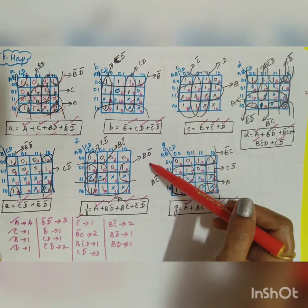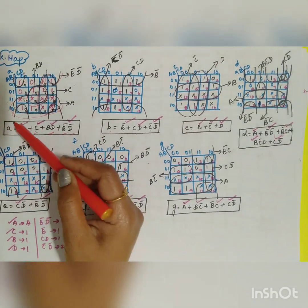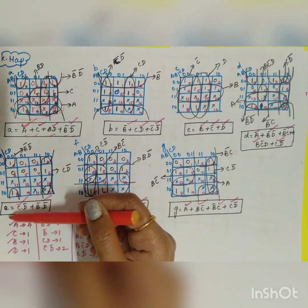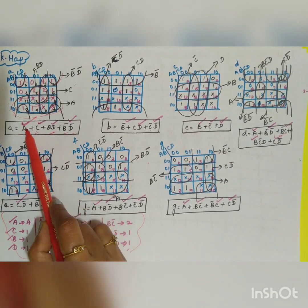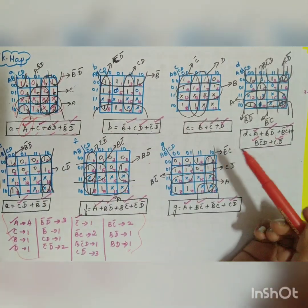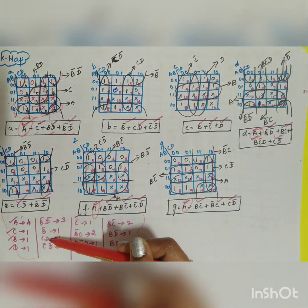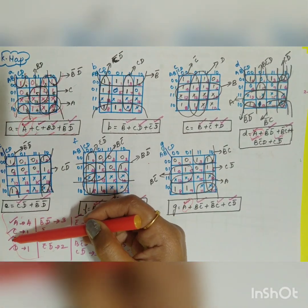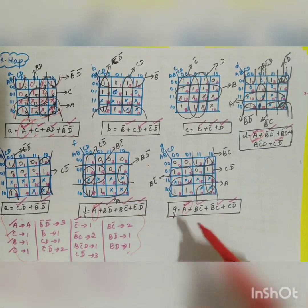Once you have solved all outputs using K-maps, you find the number of product terms. For example, product term 'A' appears in multiple outputs. Counting all product terms across outputs a through g, you get a total of fifteen product terms.